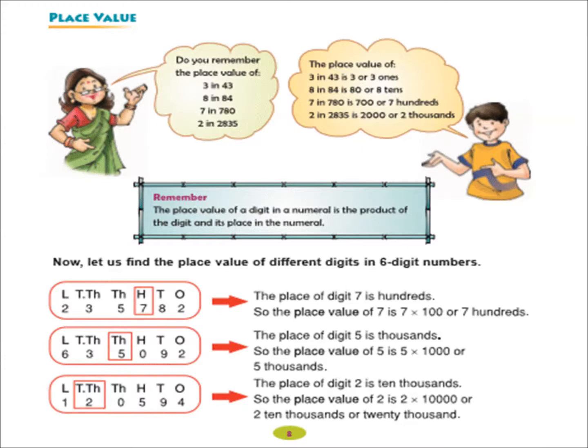Here the question is, first one, 2,35,782 and here the digit 7 is highlighted. You can see that the place of the digit 7 is 100s and its place value is, as you know, it is the product of the digit and its place in the numeral. So, we multiply the digit 7 with 100 and its place value is now 700. Now, the second one, example, 6,35,092. Here, 5 is highlighted. So, at first, you find out the place of 5, that is, the place of digit 5 is 1000s. And now, you have to find out the place value of 5. So, you multiply the 5 with 1000 and the place value of 5 is 5000.